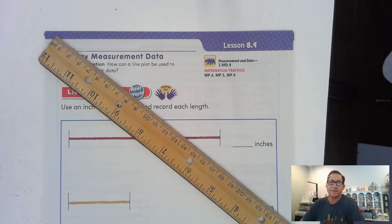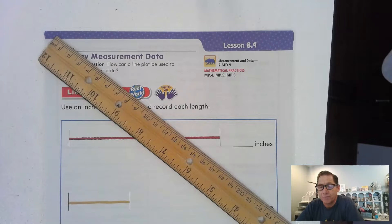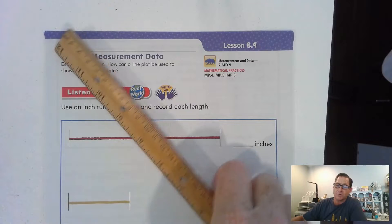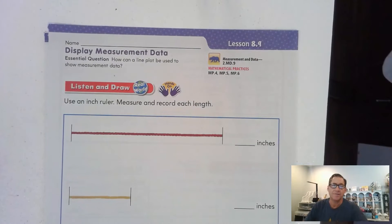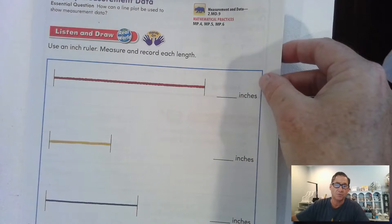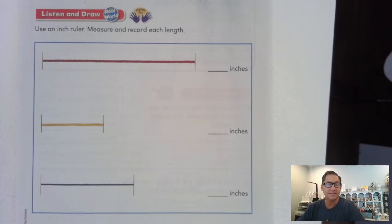Today we're discussing measurement using inches and feet, covering lesson 8.9 on page 433 of the second grade Go Math textbook. We're also going to introduce the concept of a line plot. But first, let's go ahead and review measuring with an inch ruler.